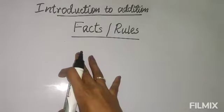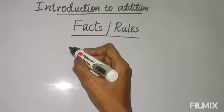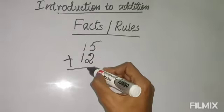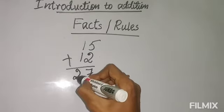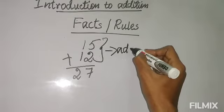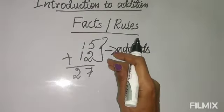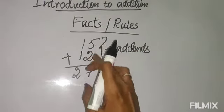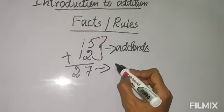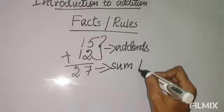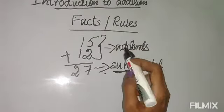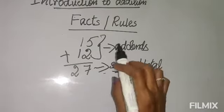Before the facts and rules, we must know the basic terminology. Suppose we are adding 15 and 12: 5 plus 2 is 7, and 1 plus 1 is 2, giving 27. The numbers which are being added are called addends. The addends can be two numbers, or sometimes three, or even more. The total we get is called the sum - we can also call it total, but the main word is sum. So the numbers being added are addends, and the answer you get is the sum.